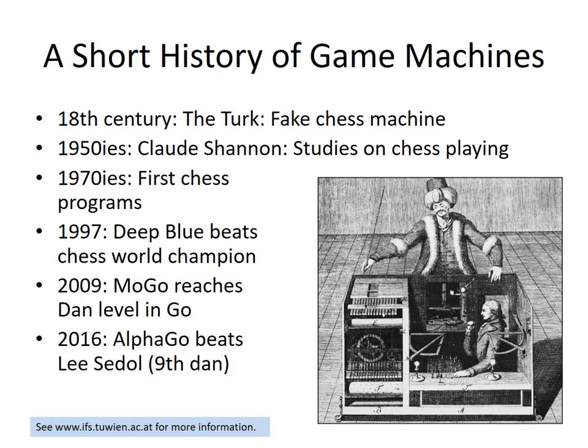Only in 2009 did the first Go algorithm, MoGo — Go being a far more complex game — reach dan level, meaning it became an actual master in Go. It could not beat the best players, but it achieved considerable results. Only in 2016, with significant effort from Google — particularly by acquiring two companies, one with a lead in Monte Carlo tree simulation and the other in deep learning — did AlphaGo manage to beat Lee Sedol, one of the best players in the world. That was a real breakthrough. Hardly anybody had expected a machine to beat a master so early.